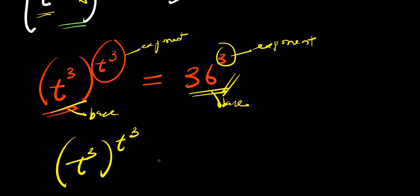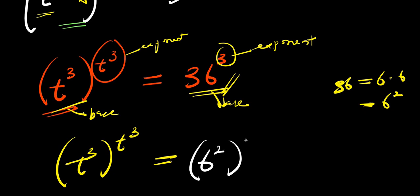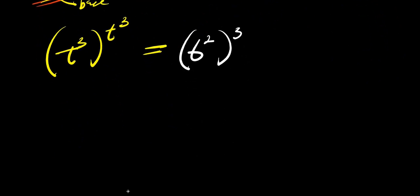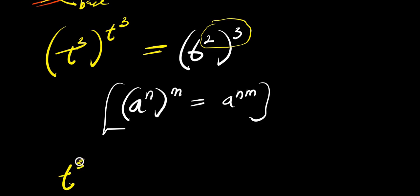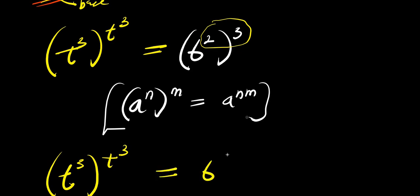So we have base t power 3, raised to the power of t power 3, equals — and here 36 is a perfect square, so we have 36 equals 6 times 6, which is 6 to the power of 2. So we have 6 to the power of 2, raised to the power of 3. Now applying the identity (a to the power of n) raised to the power of m equals a to the power of n times m, I multiply the exponents: t power 3 raised to the power of t power 3, equals 6 to the power of 2 times 3, which is 6 to the power of 6.